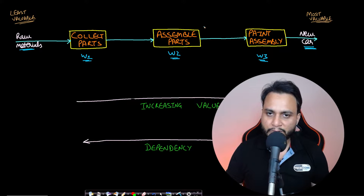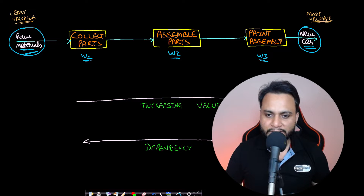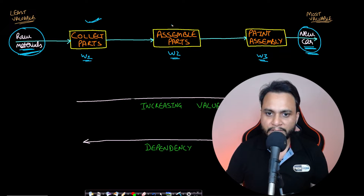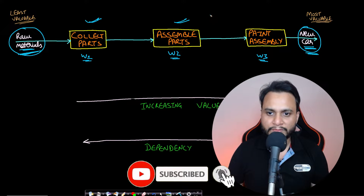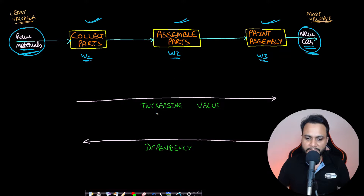Now, the value of the car will be least when it is just in the form of raw material, and it will have the most value when it is assembled and everything is done — it is just a brand new car. As work progresses: after collecting the parts and moving to assembly, the value increases; when the assembly is done and you have the structure, the value increases further; and when painting is done as well, it holds the highest value, which is the brand new car.